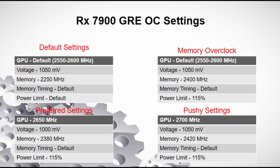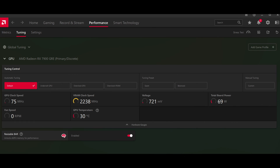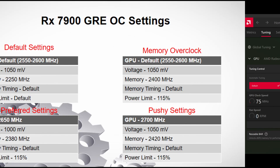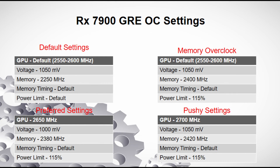Let's look at four different groups of settings that I'm going to run through a series of benchmarks and compare the performance. The first is what I'll call the default setting — what you're going to get straight out of the box with the 7900 GRE. The GPU will be set somewhere between 2550 and 2600 MHz, the default voltage is 1.05 volts or 1050 mV, and the memory — which is the issue with the 7900 GRE — is set at 2250 MHz out of the box, with default memory timing and default power limit.